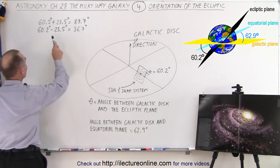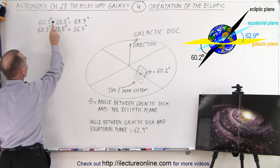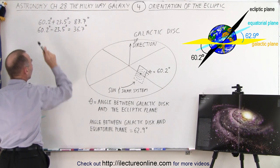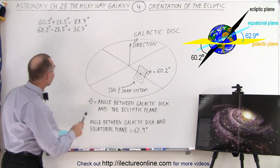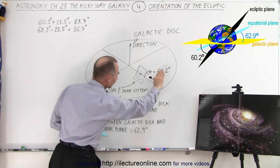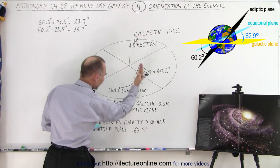And currently the angle between the equatorial plane and the galactic disk is 62.9 degrees. It is correct to say that if we take 60.2 degrees and add 23.5 degrees, or take 60.2 degrees and subtract 23.5 degrees...